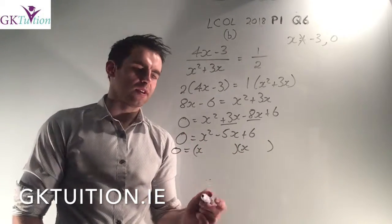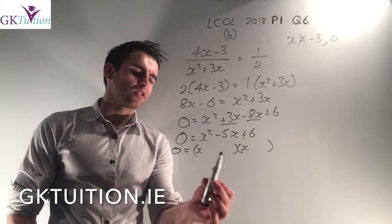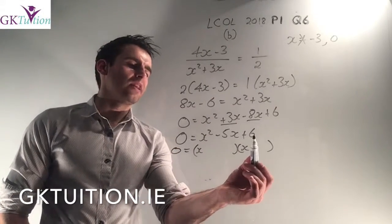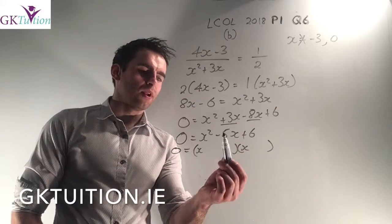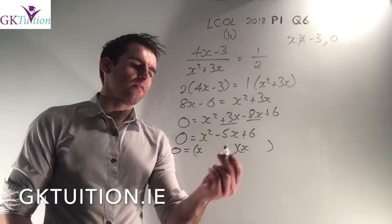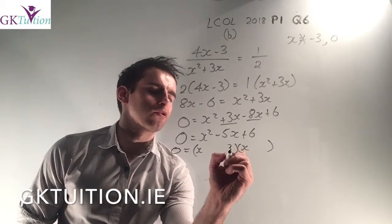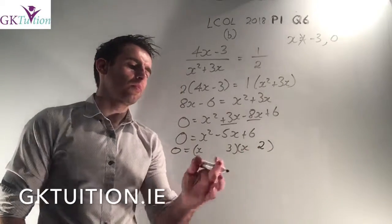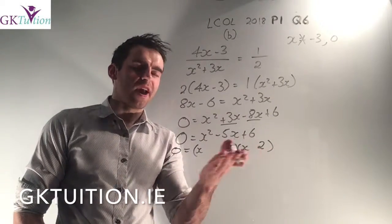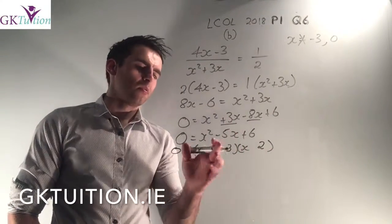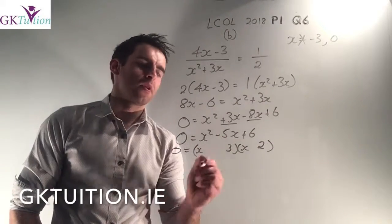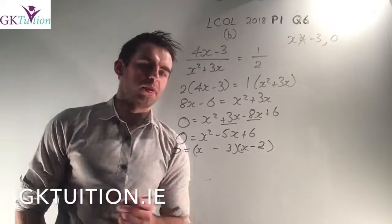And now I've just got a normal quadratic. I can factorize it. The factors of x² are just x and x. And now I need the factors of 6 that will add up to 5. The factors of 6 that add up to 5 are 3 and 2. 3 multiplied by 2 gives me 6, and if I added them together I get 5. But I want them to add up to -5. So that means I want them, they're both going to be minuses.